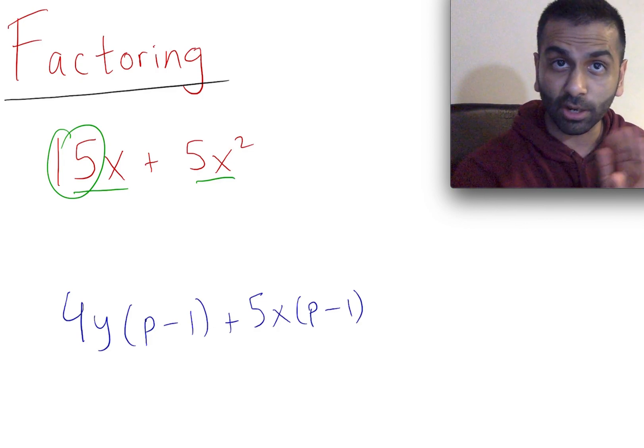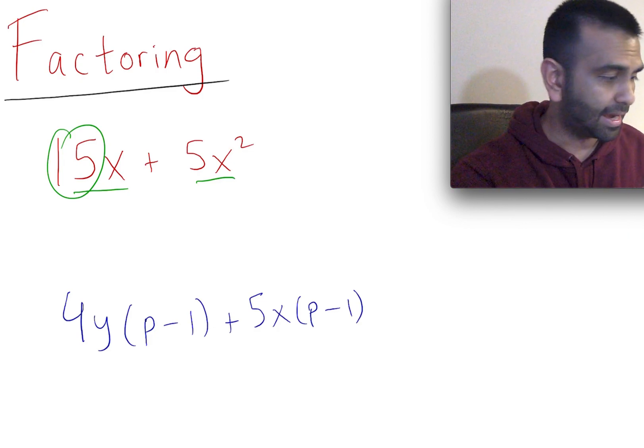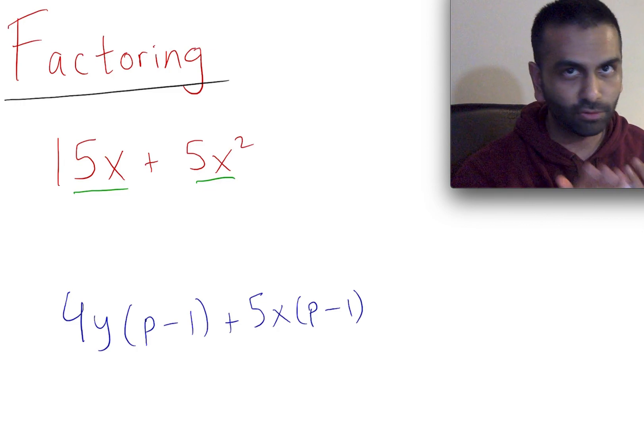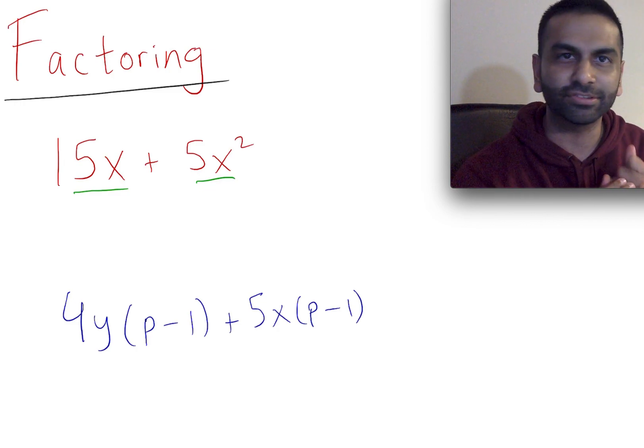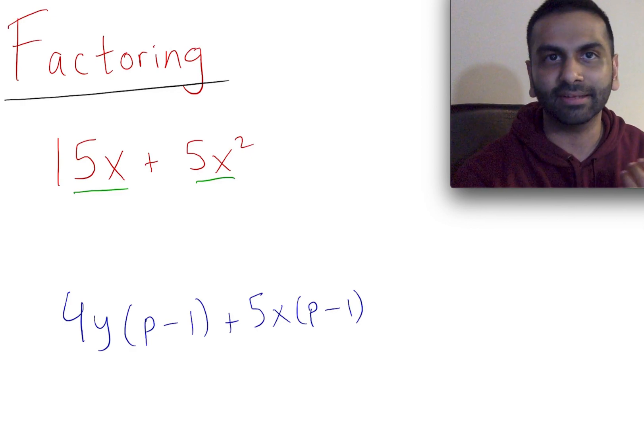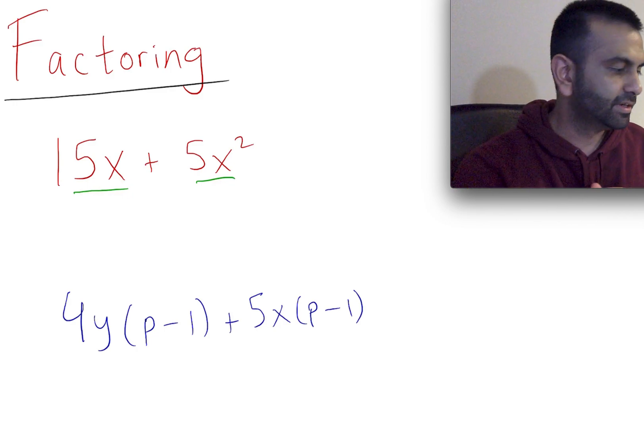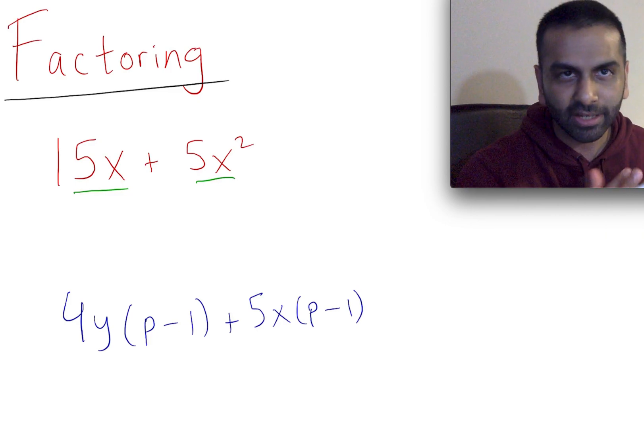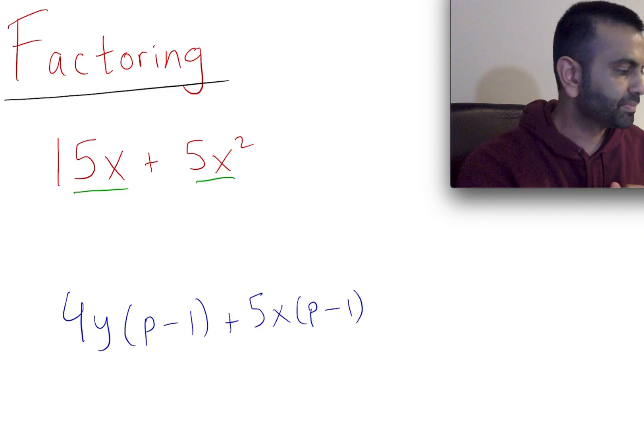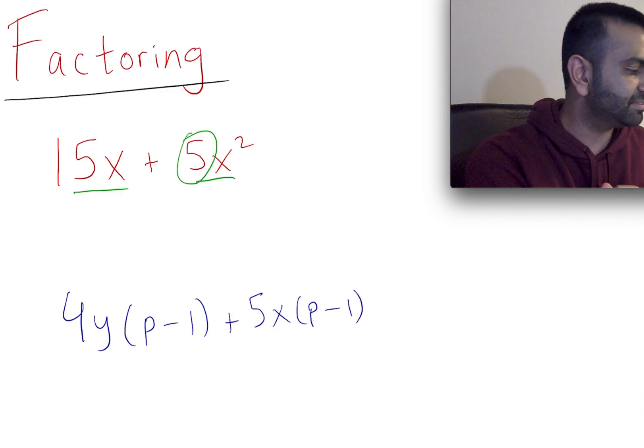In the first term, the coefficient is 15. In the second term, the coefficient is 5. If we're asking ourselves, what's the largest number that we can divide from both of those and still get a whole number, that's like saying, what's the largest common factor? That's where factoring comes from. Here, that's going to be 5. If we divide both of these by 5, we're going to get 3 for the first term and 1 for the second one. I'm going to pull out a 5, and divide the coefficient by 5, so I'm left with 3.